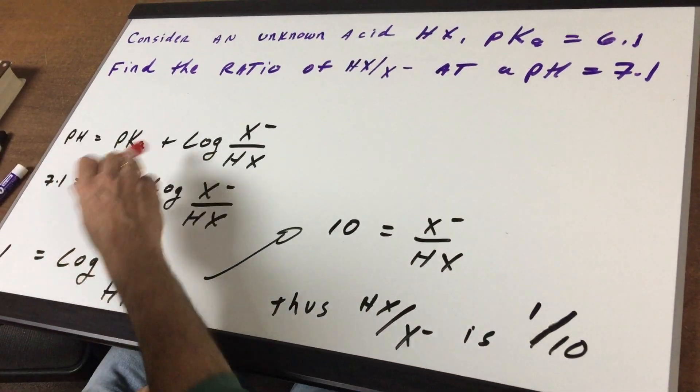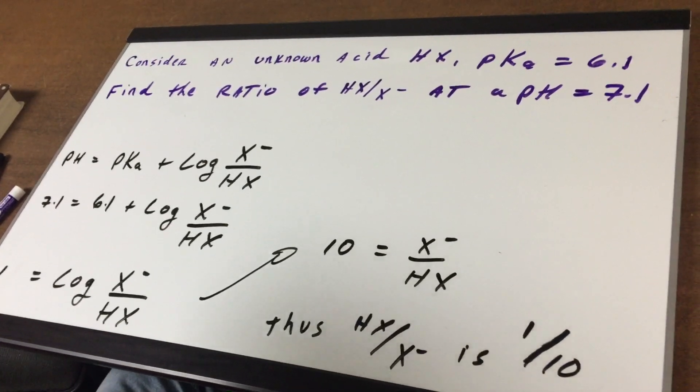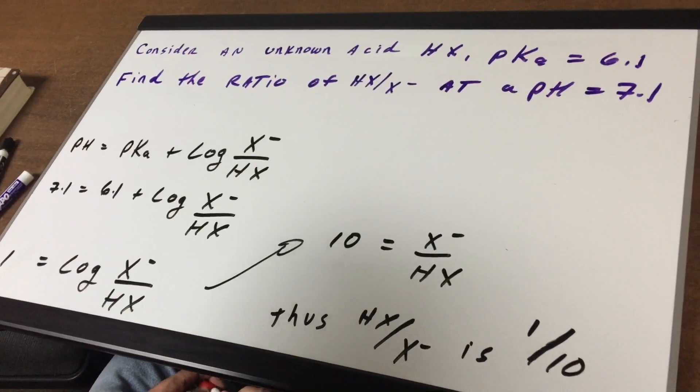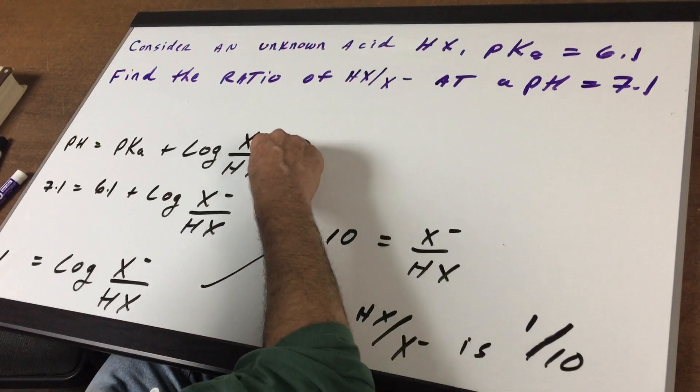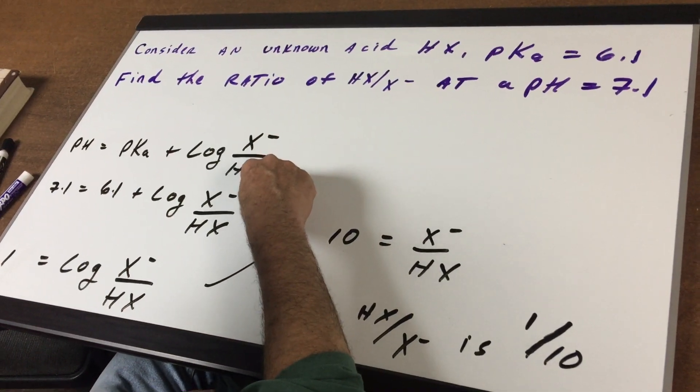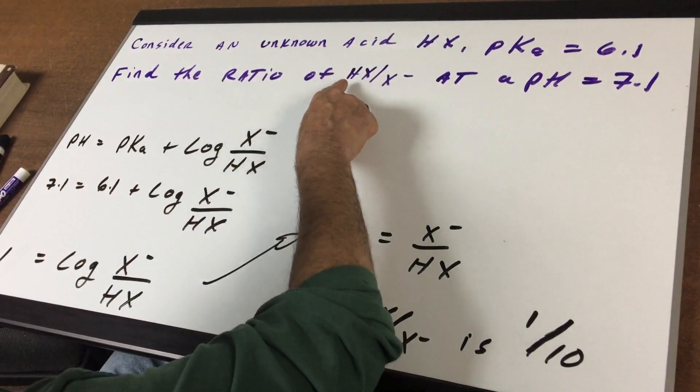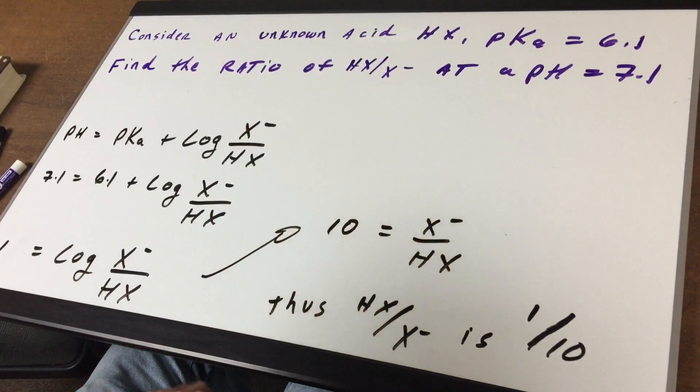So what I'm going to do is I put up the Henderson-Hasselbalch equation, pH equals pKa plus the log of the salt over the acid. Now you got to be careful, we're asking you for the acid over the salt. So that's a trap.